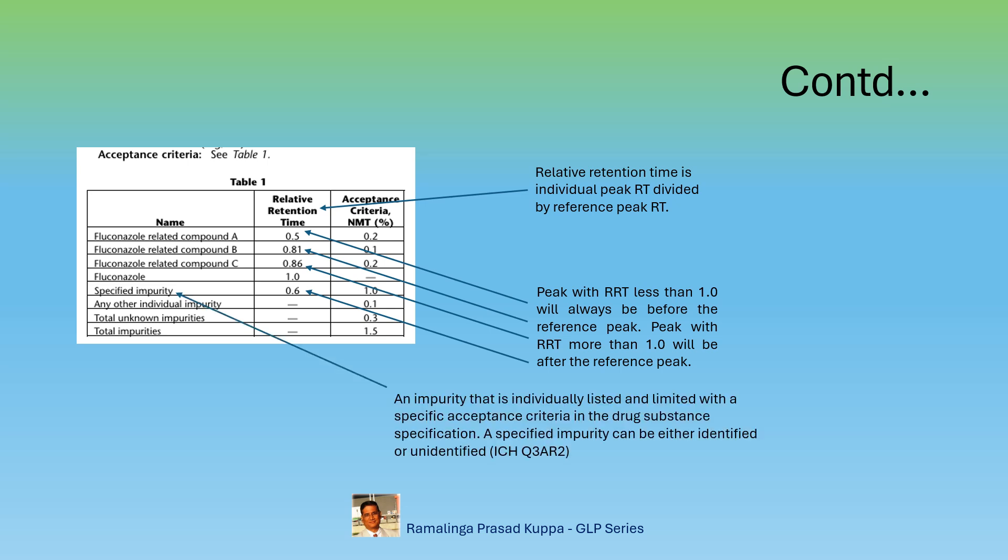Read ICH Q3AR2. You will get more elaborate information on these definitions: specified impurity, unspecified impurity, unidentified impurity, etc.